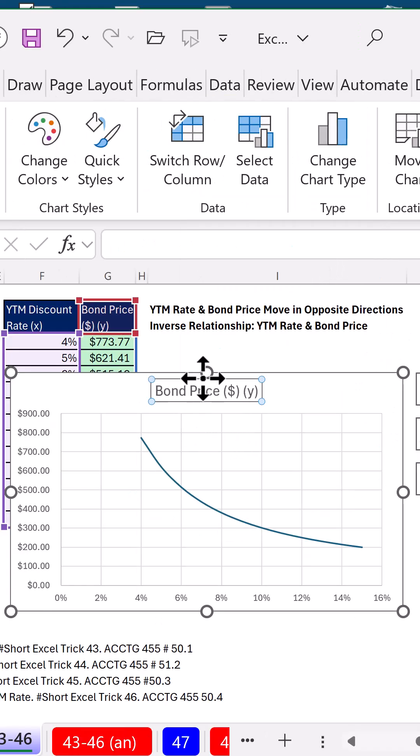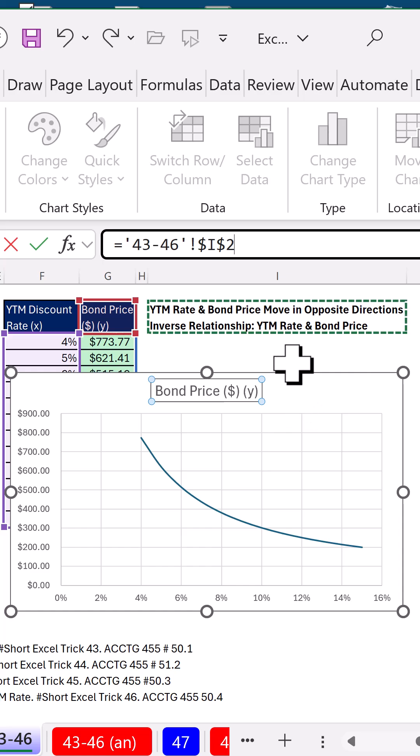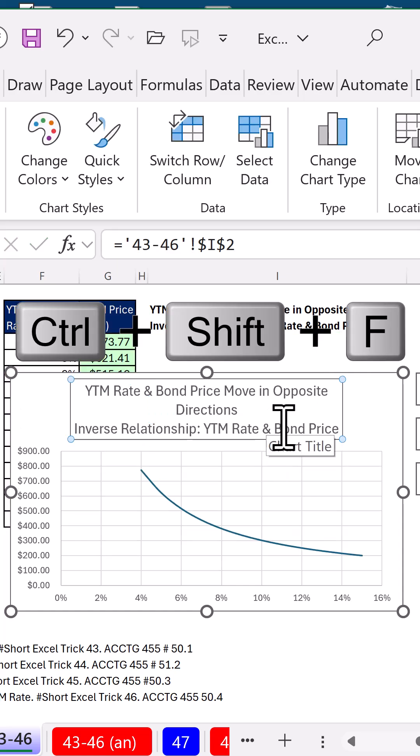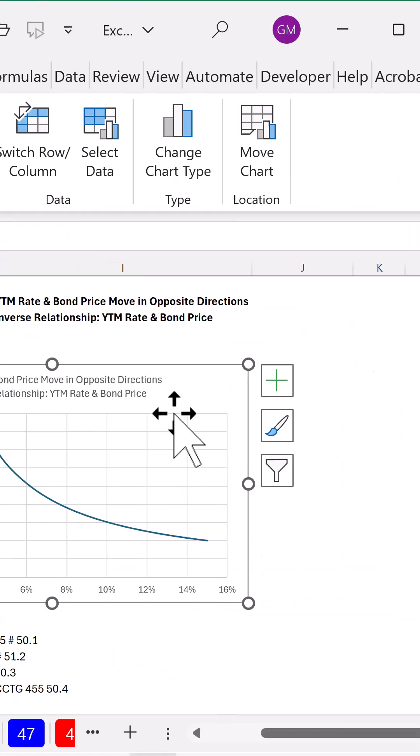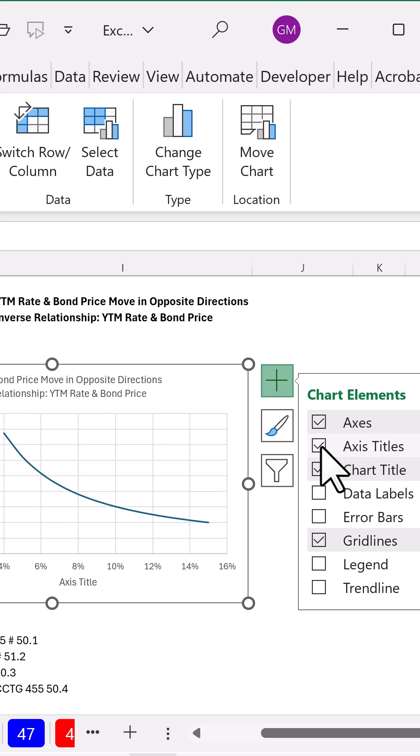Let's select title, equal sign, click on I to enter. Control-Shift-F, the font size should be 10, enter. Over to the green plus, we want axis titles.